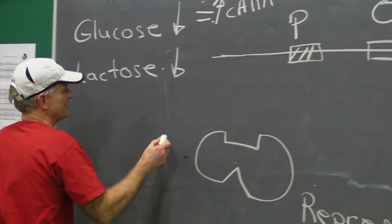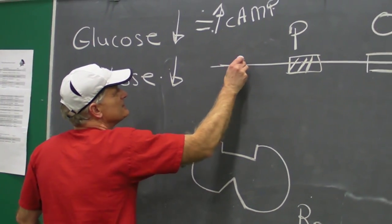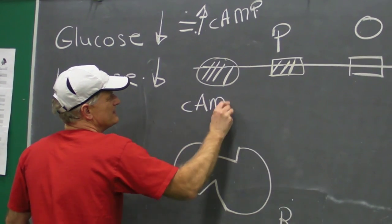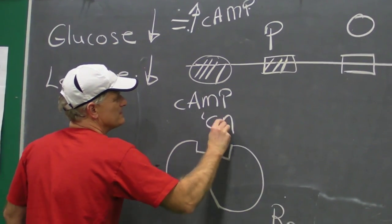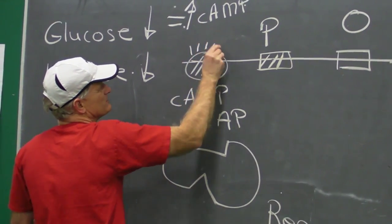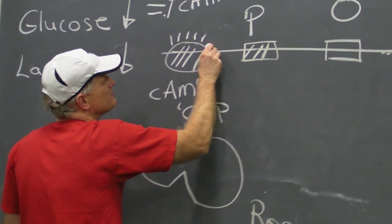Which means that cyclic AMP binds, cyclic AMP along with CAP are gonna bind in front of the promoter sequence. The landing lights are on and you are ready for transcription.